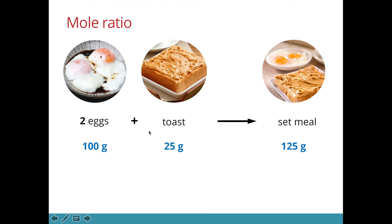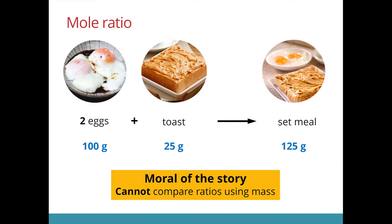These numbers in front represent the number of pieces and not the mass. We can see that 2 eggs might weigh 100 grams, a toast might weigh 25 grams. So we cannot say that the ratio is 4 is to 1. However, we see that all the reactants — those things on the left — when I add up all the masses, it will be the same as the masses of the products. So the moral of the story is that when we compare ratios, we cannot use mass to compare the ratios.